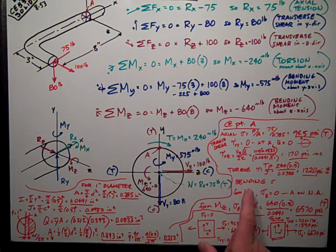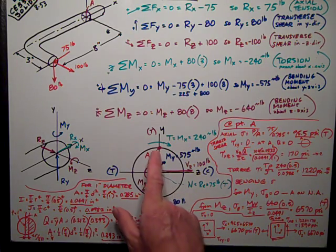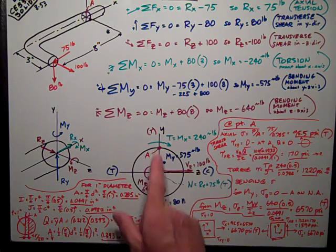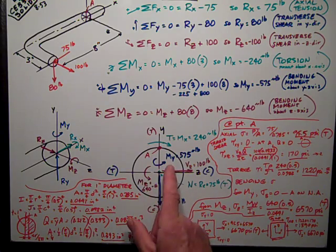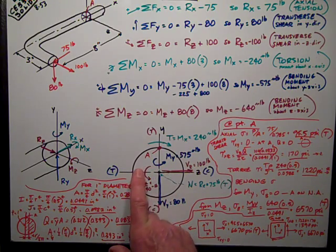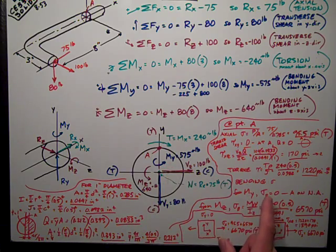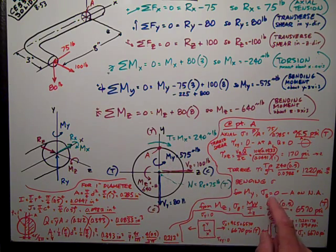I have two moments that create bending. The bending about the y-axis at point A, since it lies on the neutral axis, which is the y-axis, the bending stress at the neutral axis is zero.